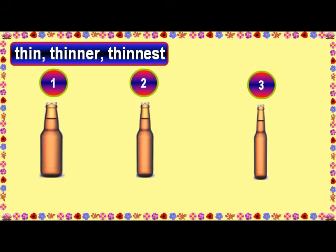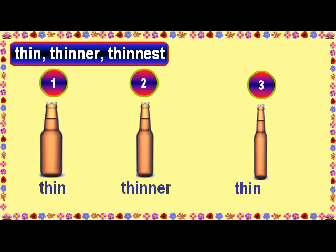Thin, thinner, thinnest. The bottle number one is thin. The bottle number two is thinner than the bottle number one. The bottle number three is the thinnest of all the bottles.